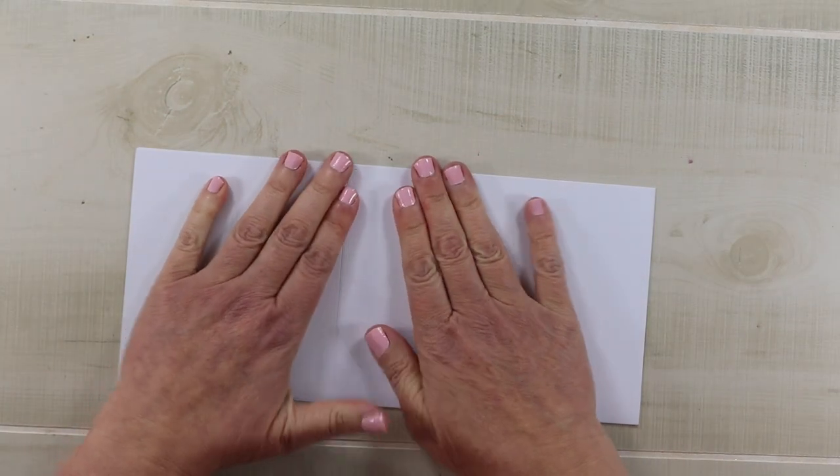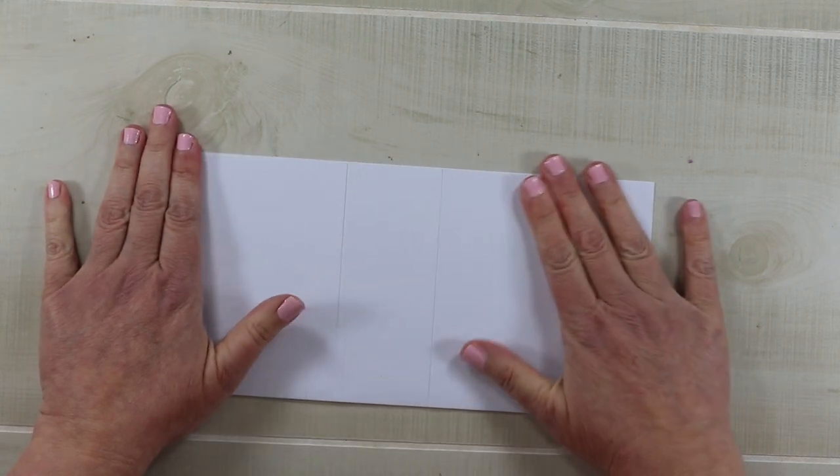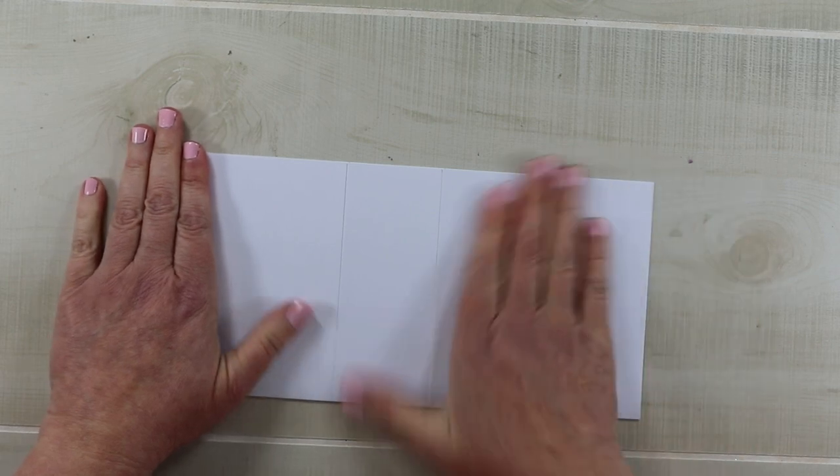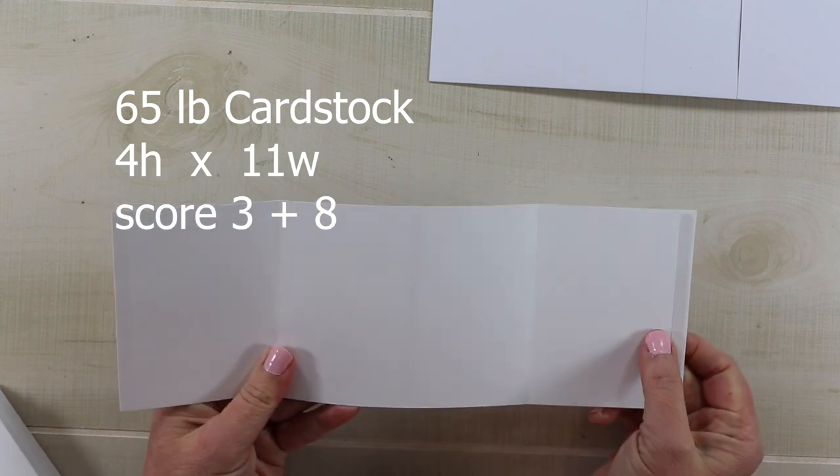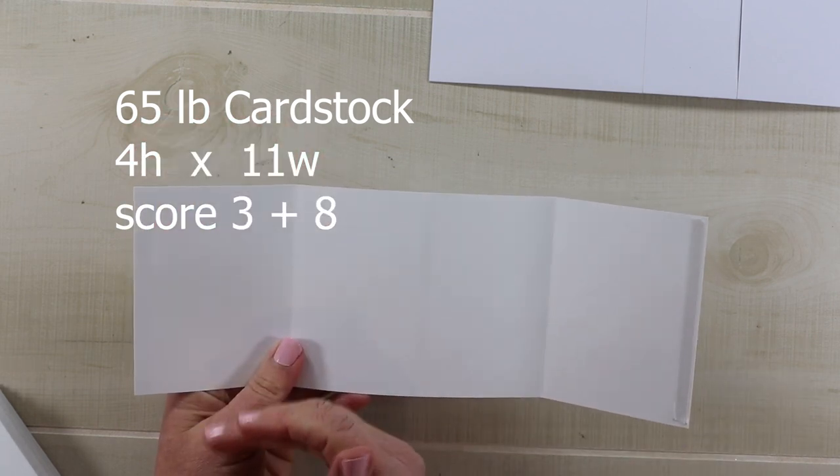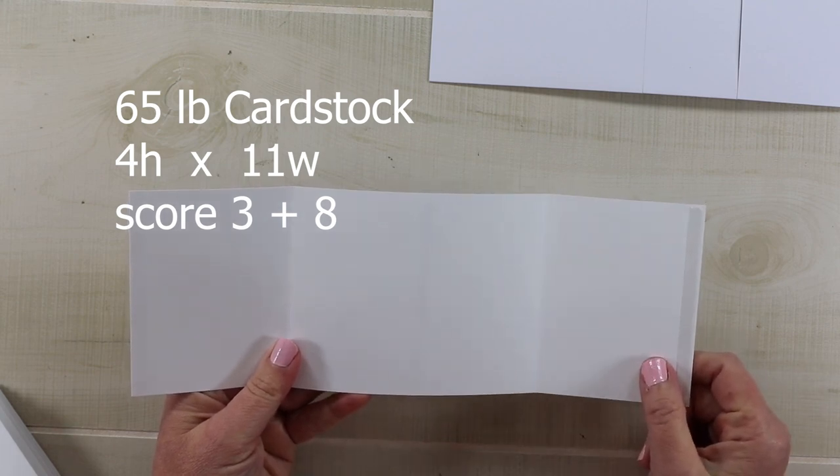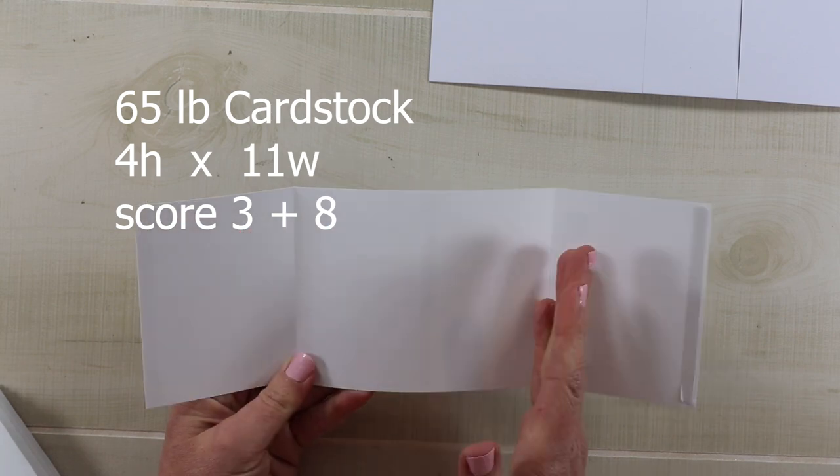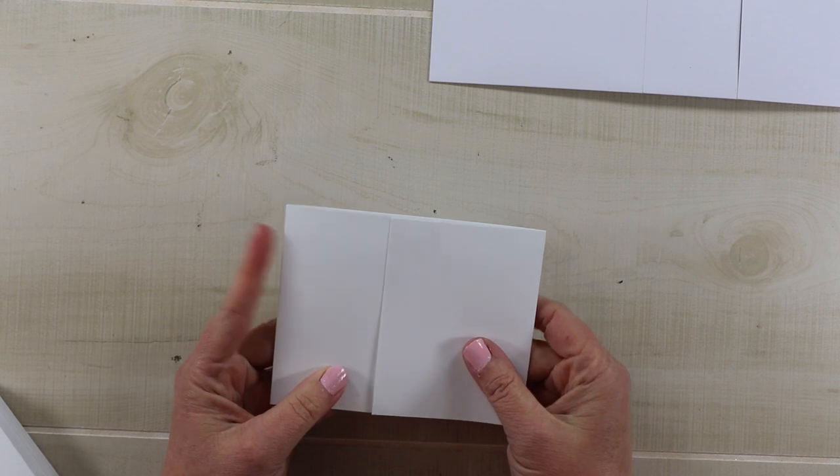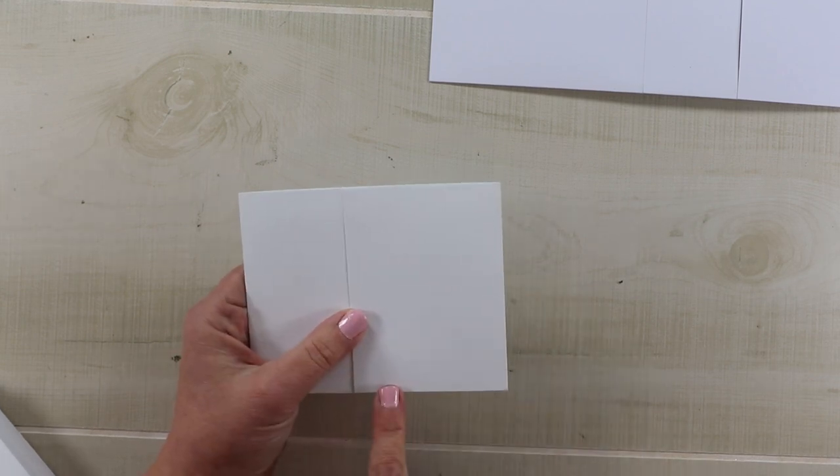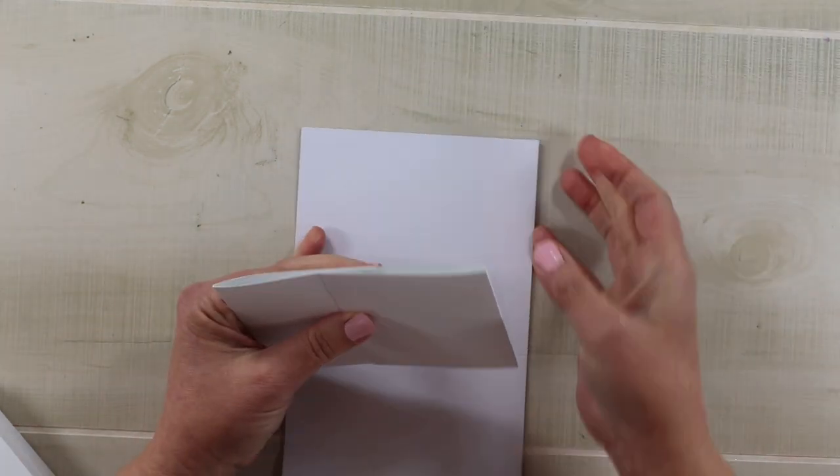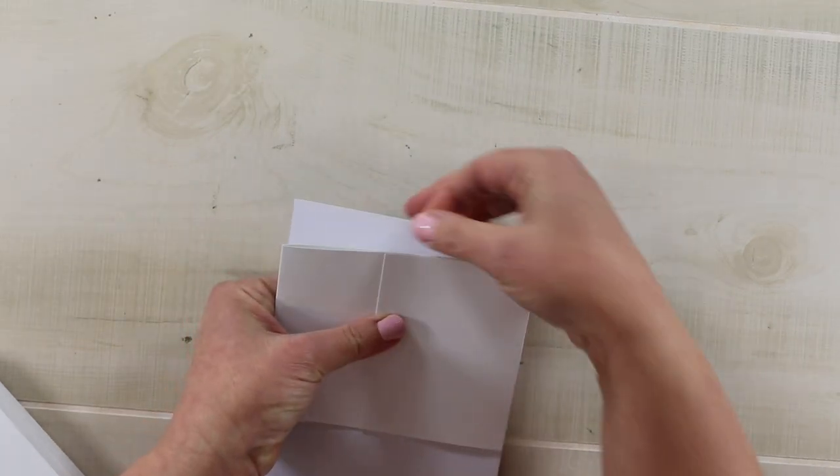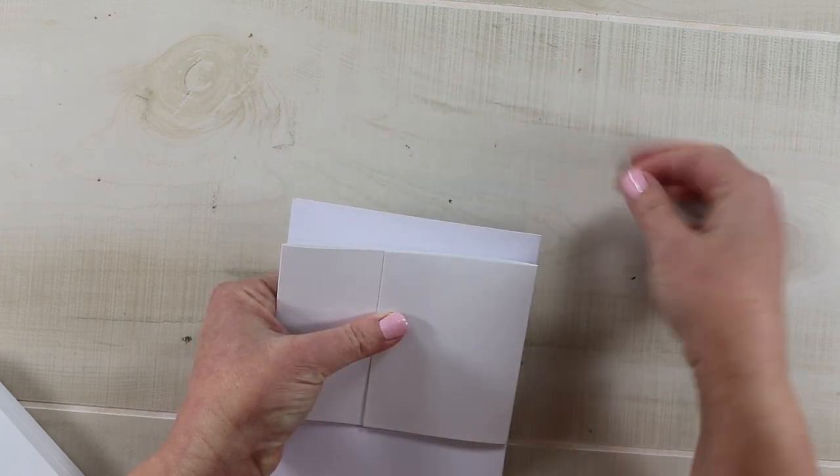We've got our base created and we can just set this aside as we're working along. The next step we want to get to is the accordion portion that is going to hold all of our inserts. What I have here is now 65 pound weight card stock. I have cut a piece that is four inches high by 11 inches wide, and I scored it at three and also eight. When they are folded in, this is going to give me the pocket size of four inches by five inches wide.